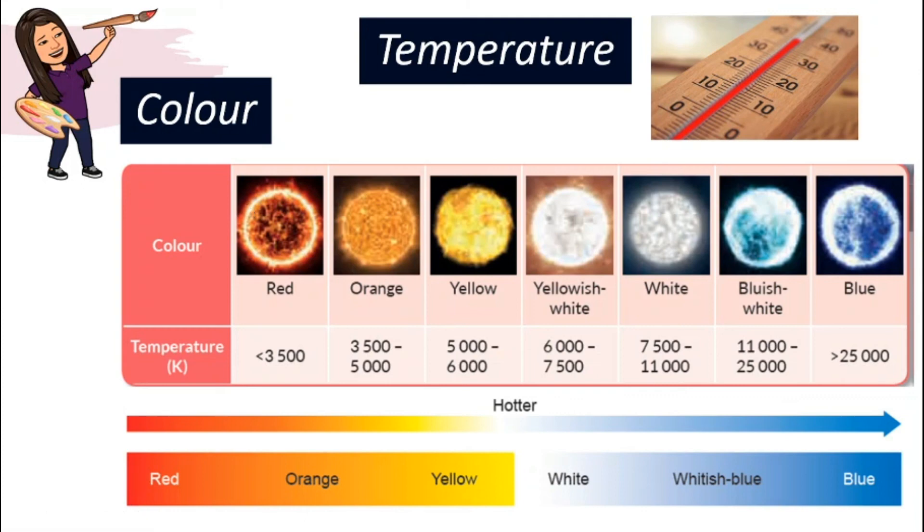If you can see the star compared to another star, if the color is more towards red, that means that star will probably have a lower temperature compared to a star that looks more towards blue color.